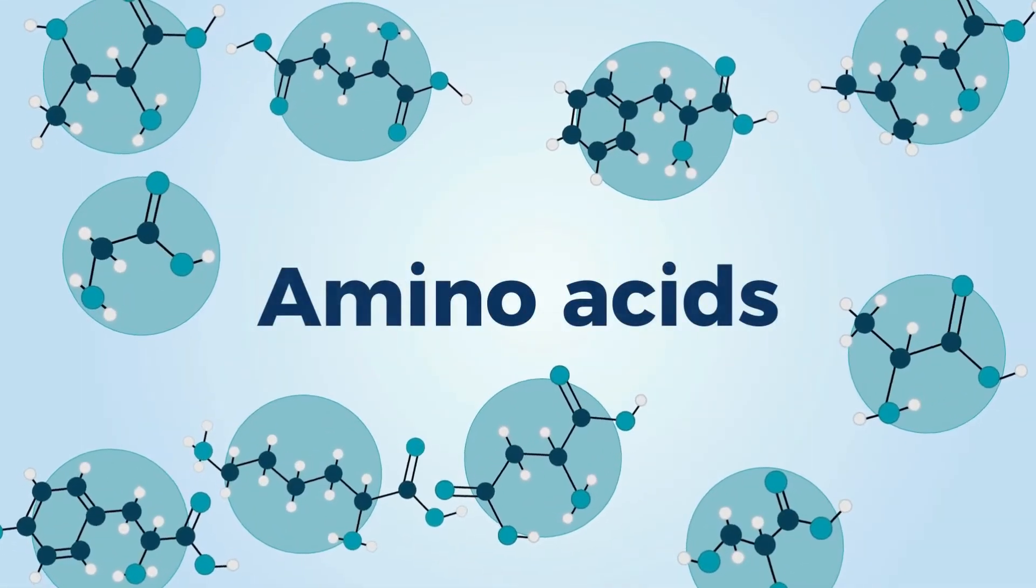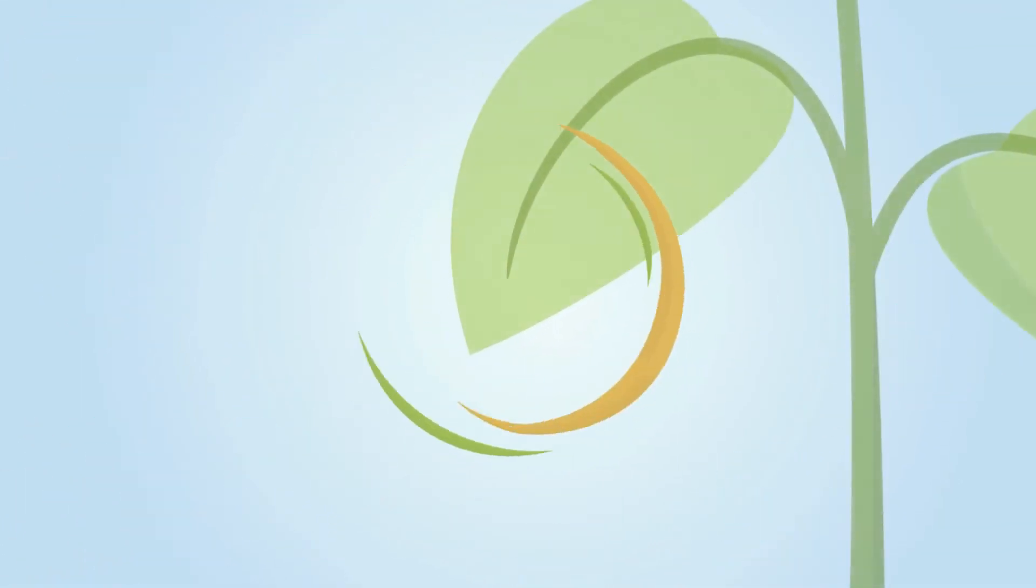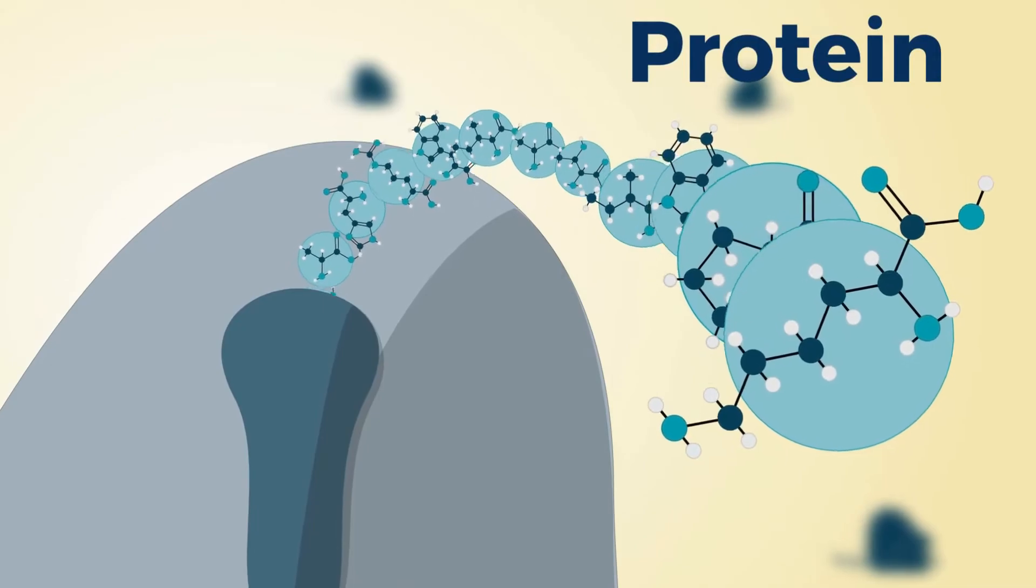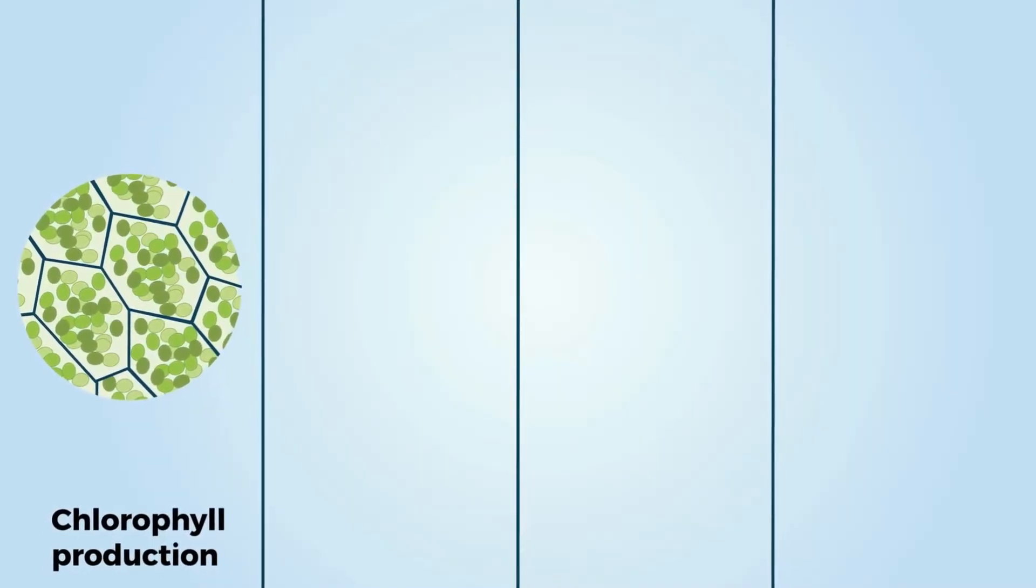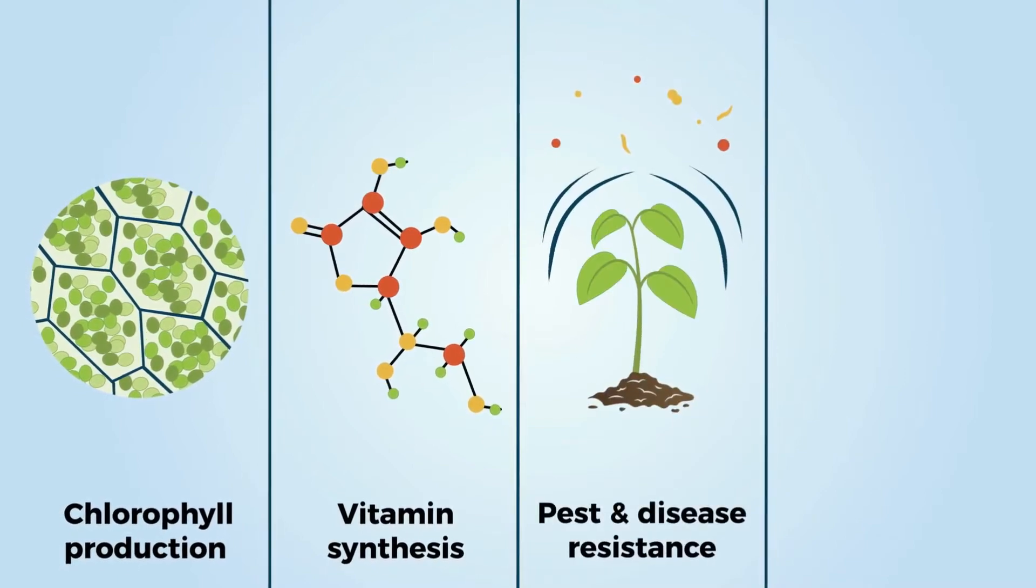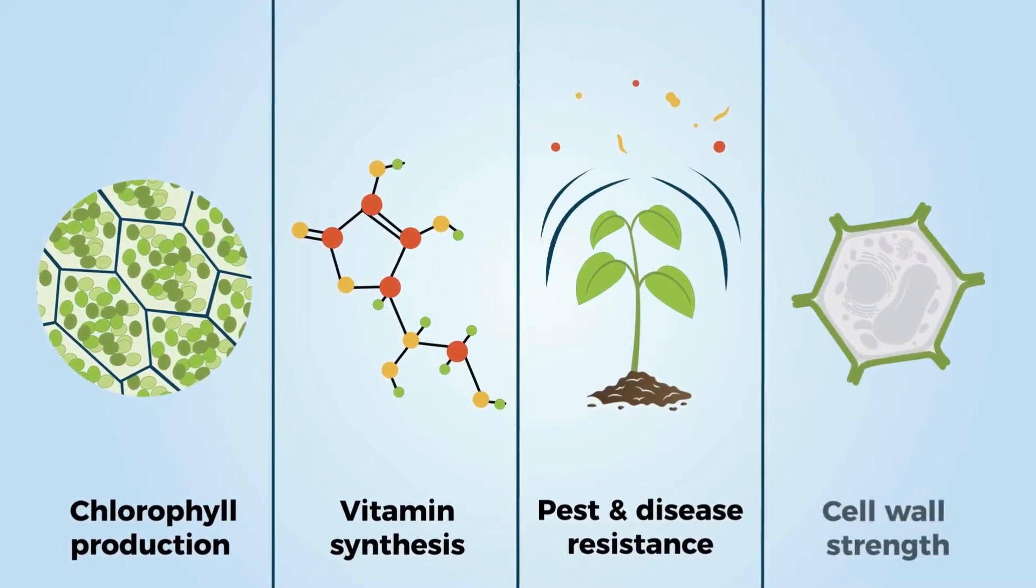Amino acids play a number of vital roles in the metabolism of plants. Besides being the fundamental building blocks for protein synthesis, they increase chlorophyll production and promote development, stimulate vitamin synthesis, increase pest and disease resistance, and enhance cell wall strength.